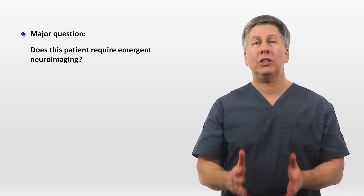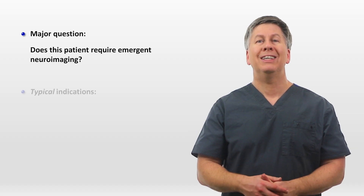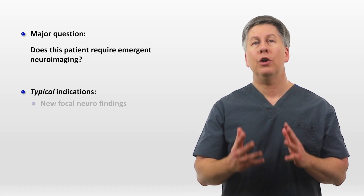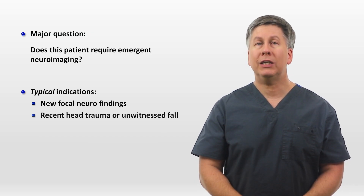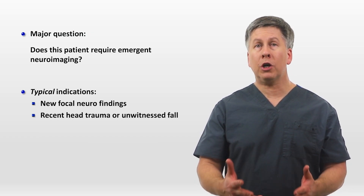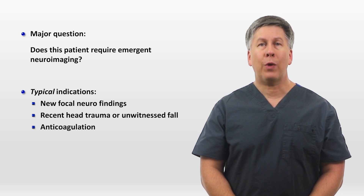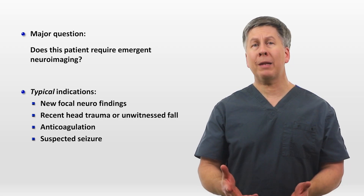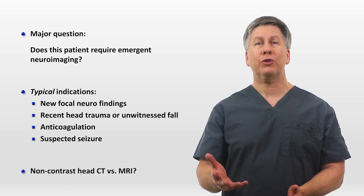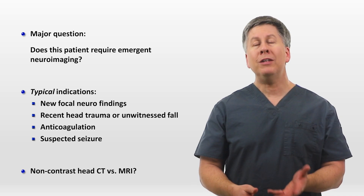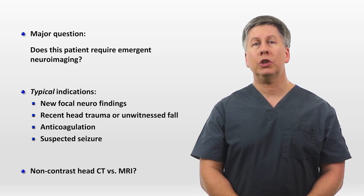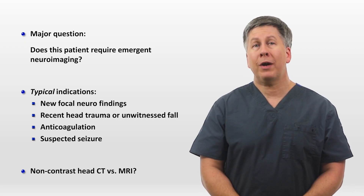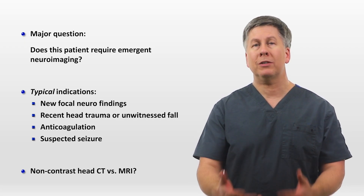While every situation is different and there will be exceptions, typical indications for emergent neuroimaging include new focal neural findings, recent head trauma or an unwitnessed fall, the use of anticoagulation, and a suspected seizure. Whether that emergent scan should be a non-contrast head CT or an MRI depends on their relative accessibility at your institution and how suspicious you are of an acute ischemic stroke, which is better evaluated by the much longer and much more expensive MRI.